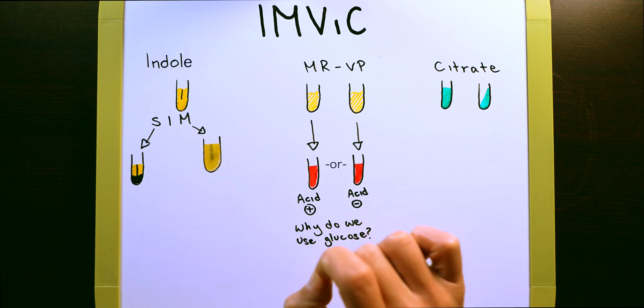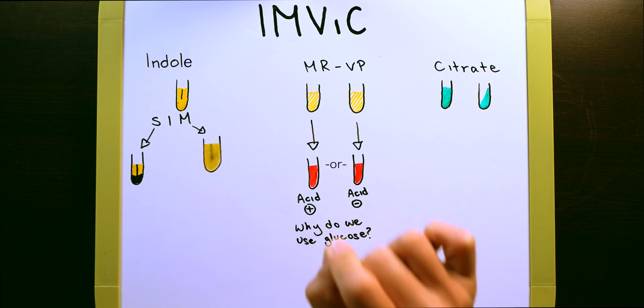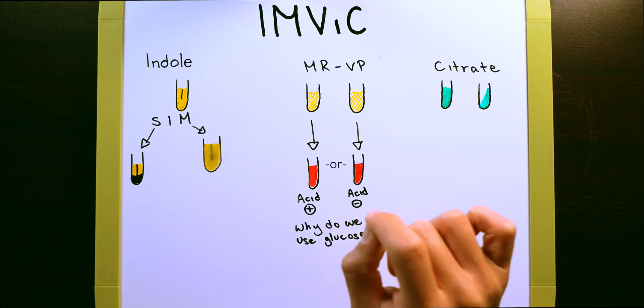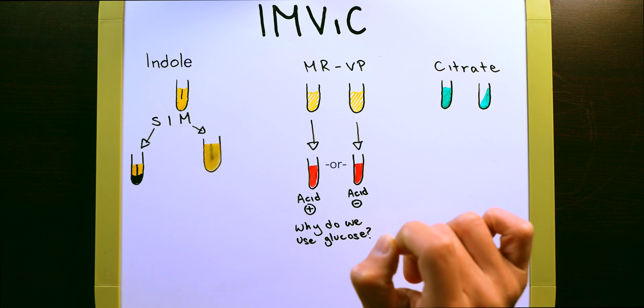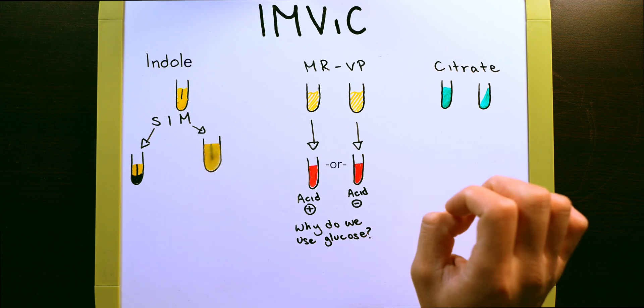So make sure that you're able to decipher a partially cloudy test tube from a fully cloudy test tube. That is how you're going to know whether or not that you have a positive motility test or not.